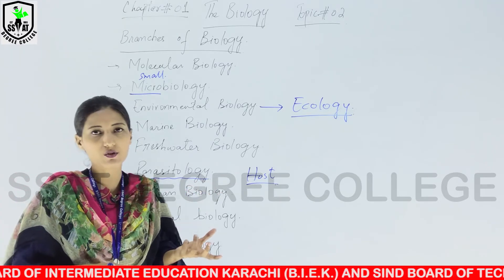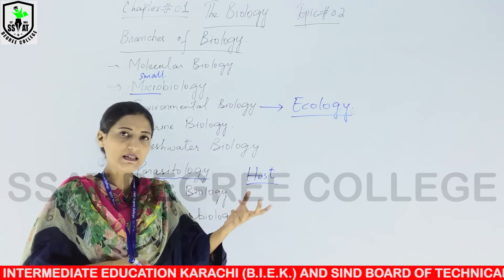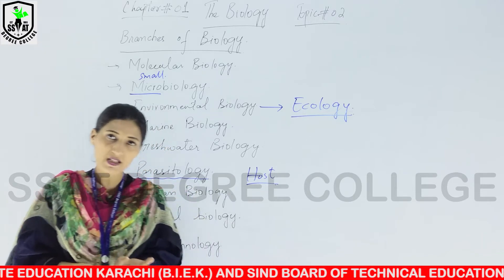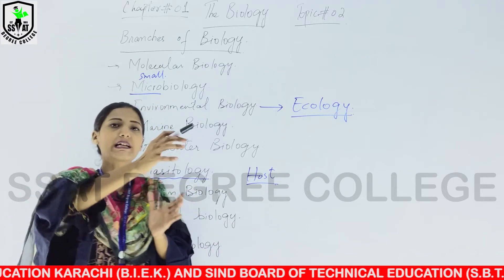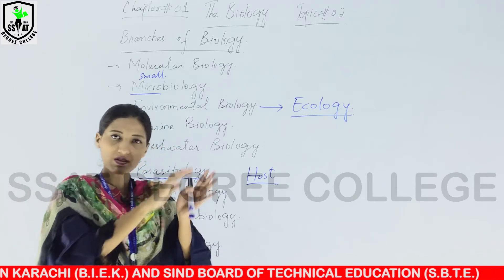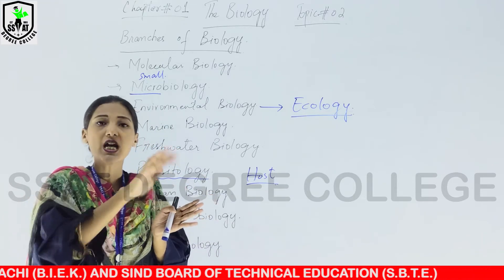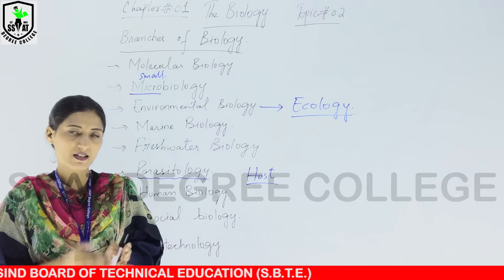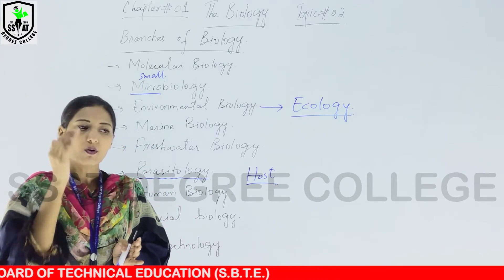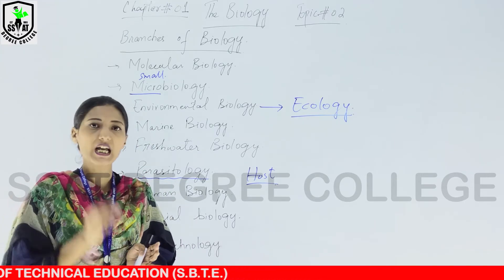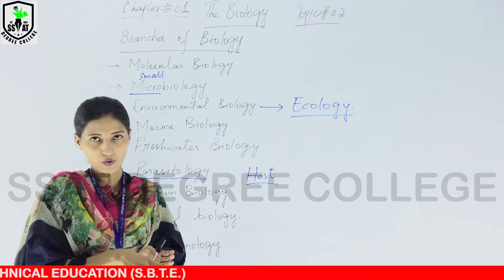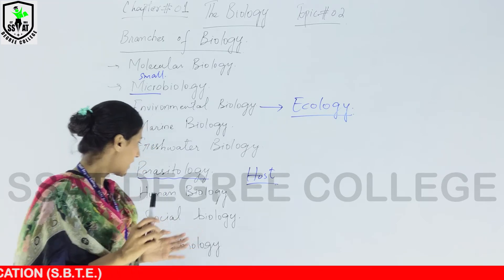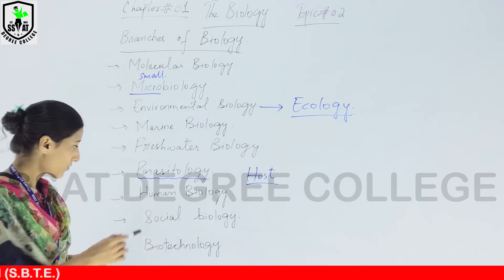Parasites are of two kinds: ecto-parasites and endo-parasites, as is clear from their names. Ecto-parasites are those that live on the outer surface of any host, while endo-parasites are those that exist inside the host and are not present on the outer surface.